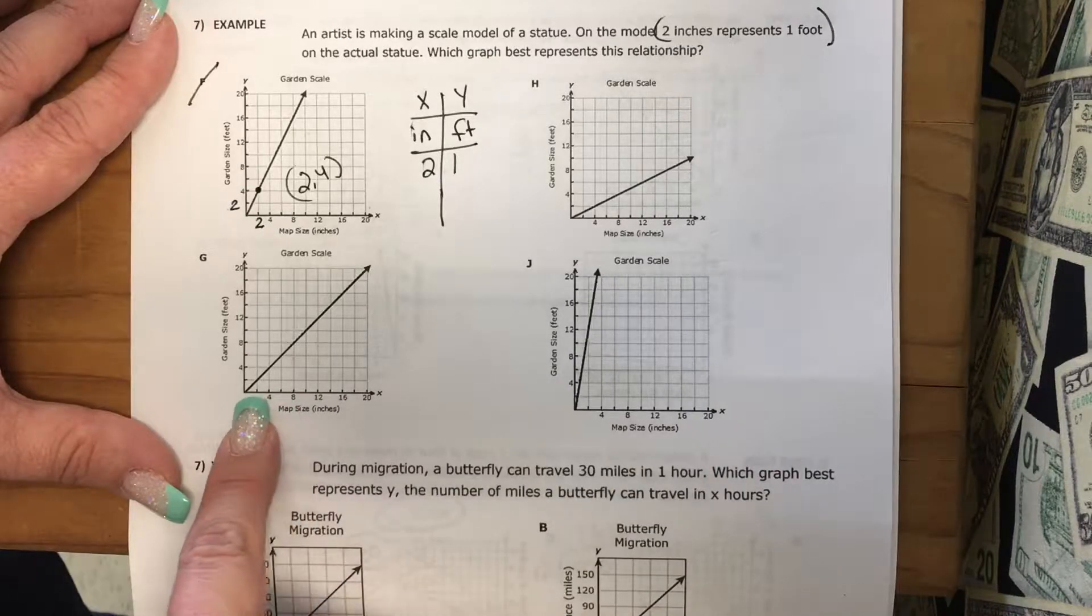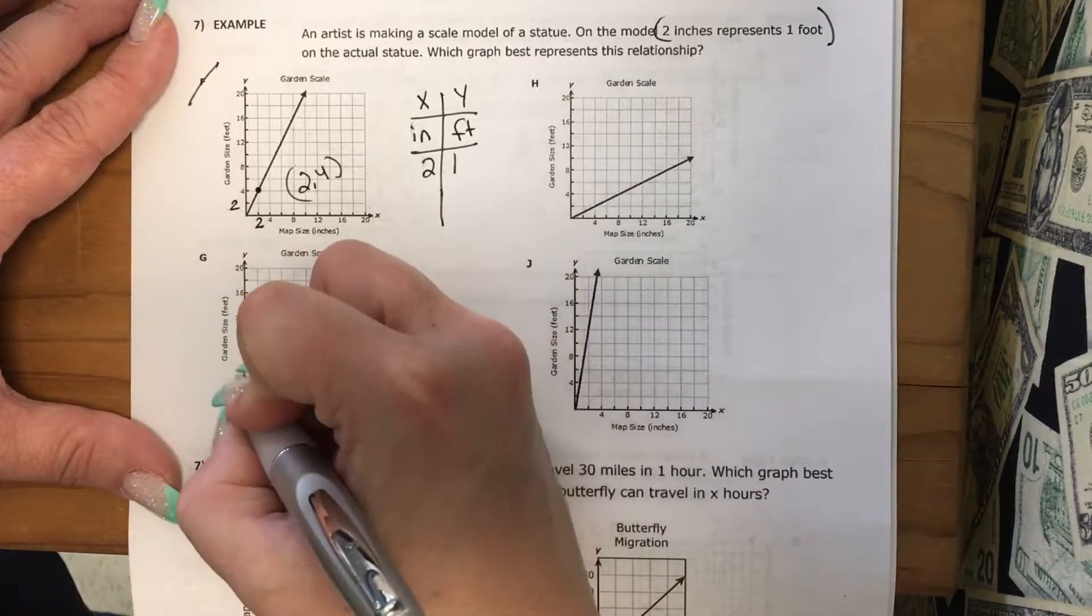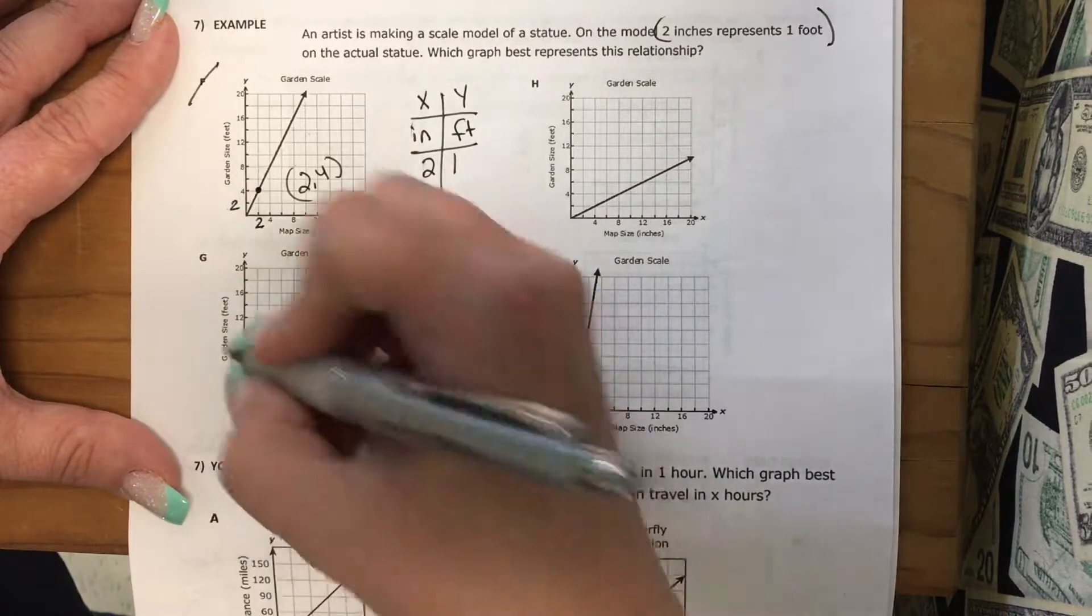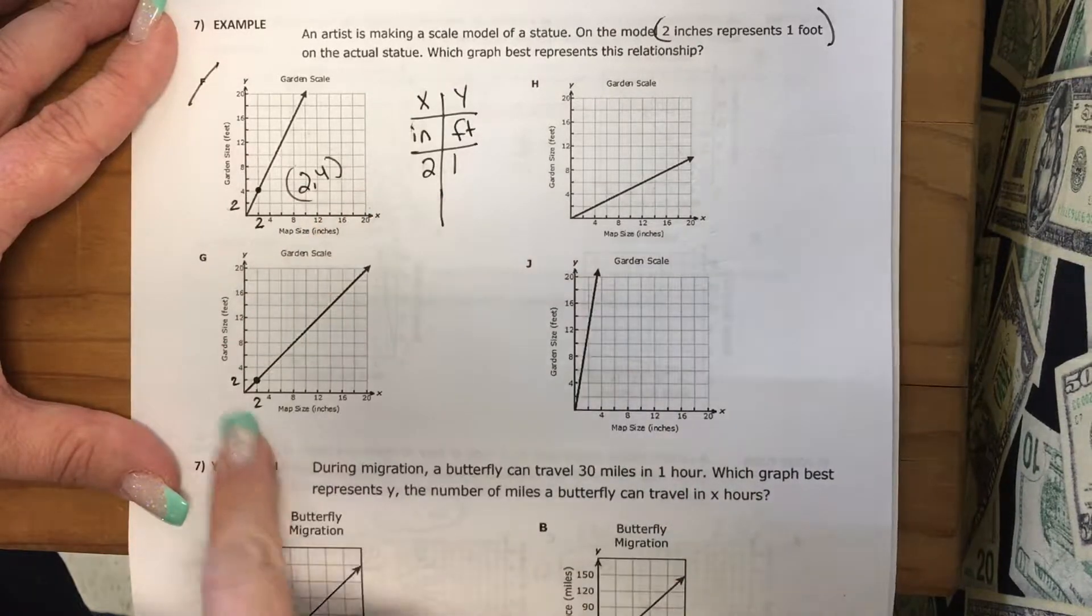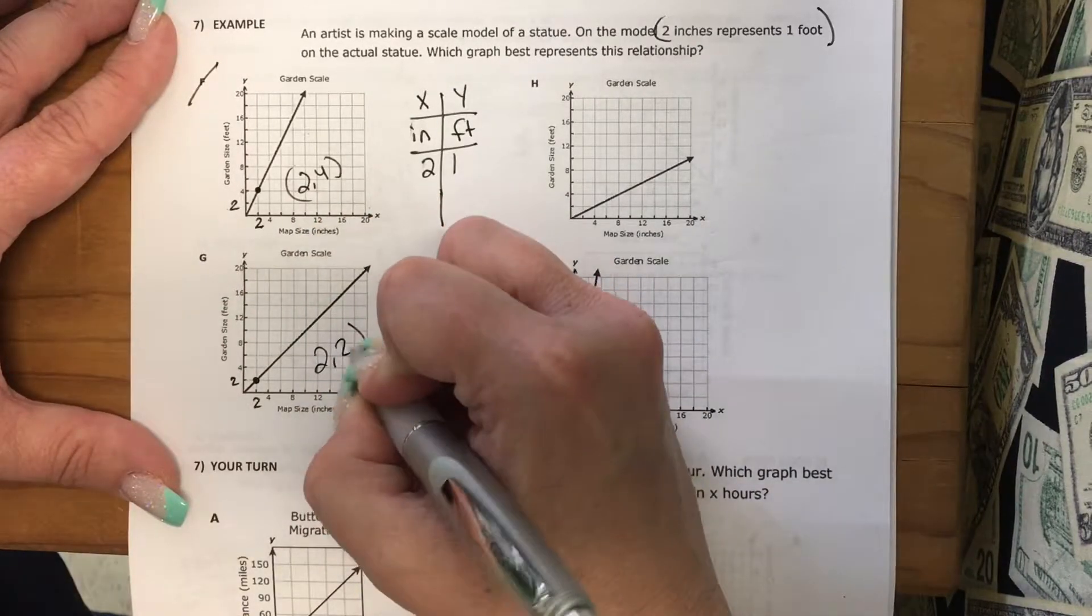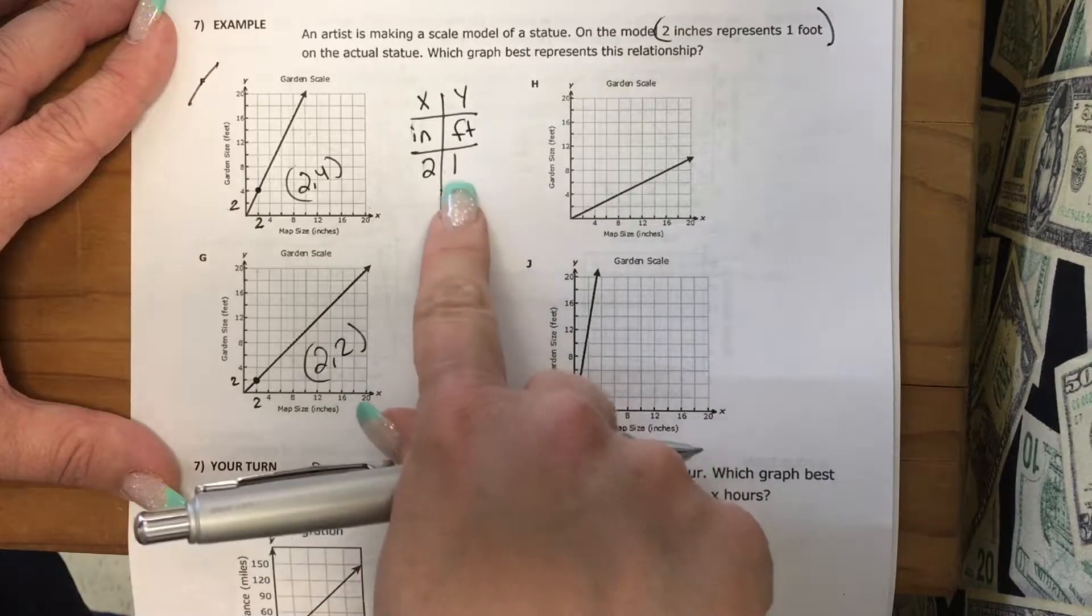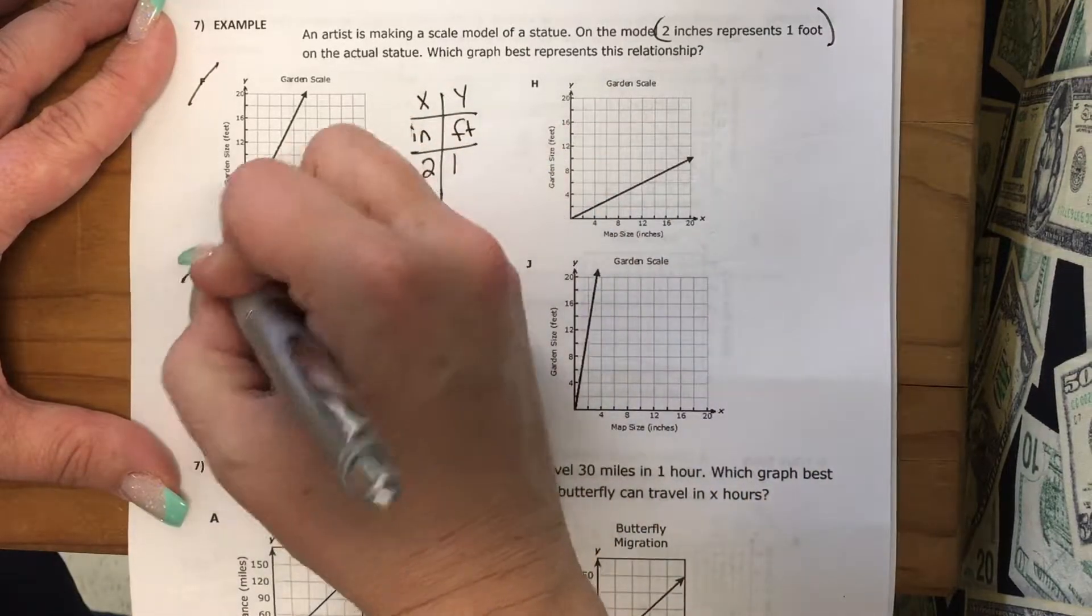I want to look at G. Well, G, here's 2 and here's 2. So when my x is 2, my y is 2. So I get 2, 2. Is 2, 2 the same as 2, 1? No. So I try the next one.